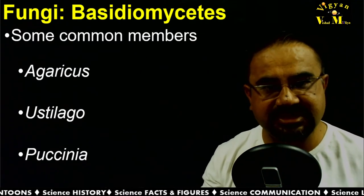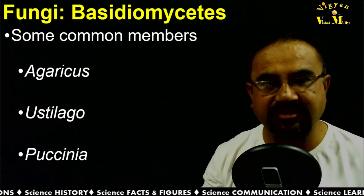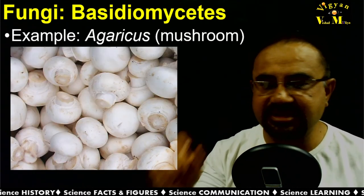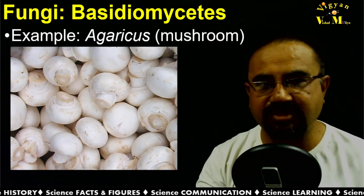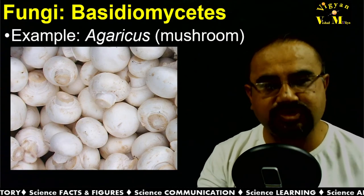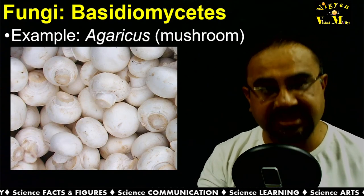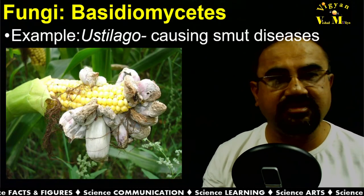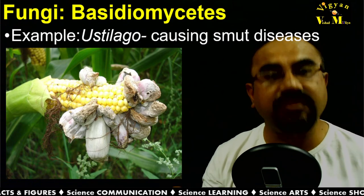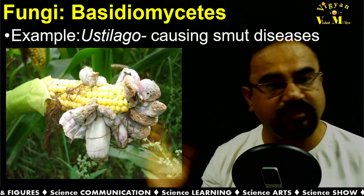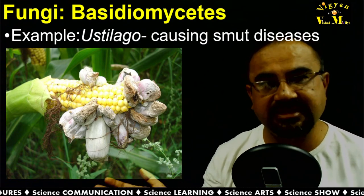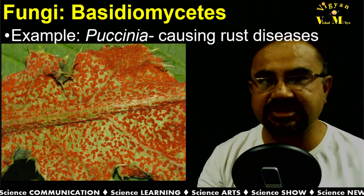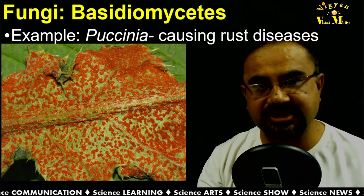Common examples of Basidiomycetes are Agaricus, Ustilago, and Puccinia. Agaricus is the edible mushroom. Ustilago causes smut disease, and Puccinia causes rust disease.